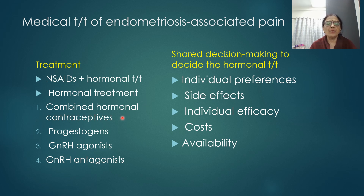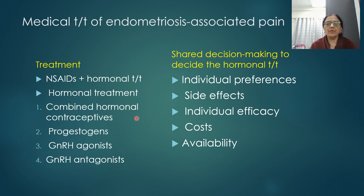In hormonal treatment, the first drug of choice remains combined hormonal contraceptives. Second are progestogens including progestogen-only contraceptives. Third is GnRH agonist, and recently GnRH antagonists have also emerged as an option. The choice depends on individual patient preferences, side effects experienced, individual efficacy, cost, and availability.